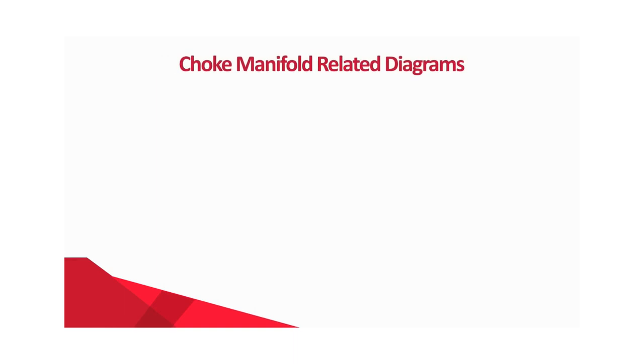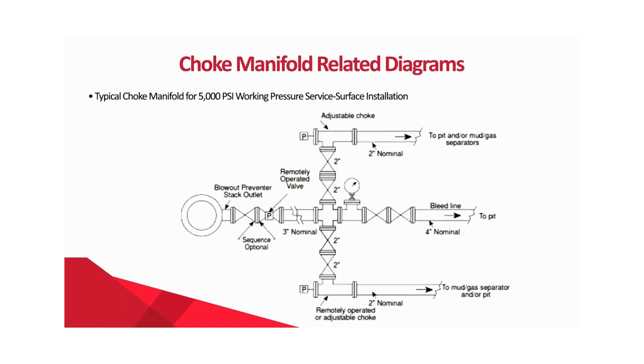Choke manifold related diagrams. Typical choke manifold for 5,000 PSI working pressure service, surface installation.